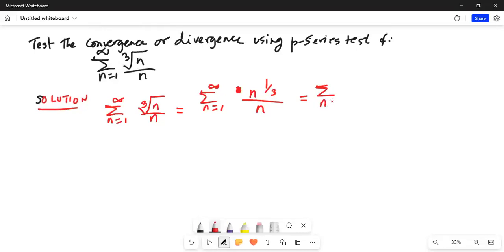Now I will remove the n with exponent one-third from the numerator to the denominator, so the sign of the exponent will change. It will be 1 divided by n multiplied by n to the power of minus one-third. I will add the exponents of n in the denominator, so it will become 1, n^(3/3) minus 1/3. That will be equal to sigma n equals 1 to infinity, 1 over n to the power of two-thirds.